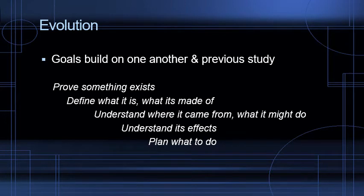The goals build on one another. Any time you are doing research and making an argument, you are building on what other people have already done on the topic. Once you prove something exists, you can define what it is and what its key features are. Once you know that, you can understand where it came from and what it might do — whether it's a situation, a specific object, or a trend. And then you can understand its effects. You really can't plan what to do unless you have some sense of what the thing is, where it came from, and what it's doing.